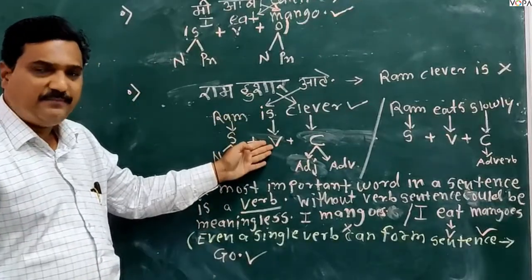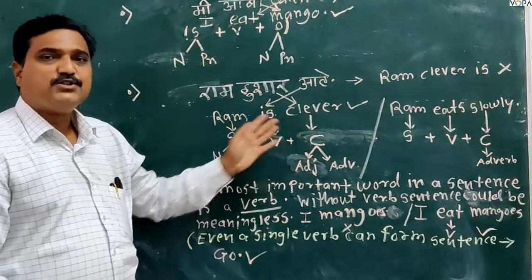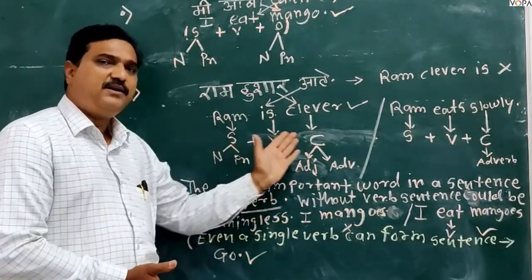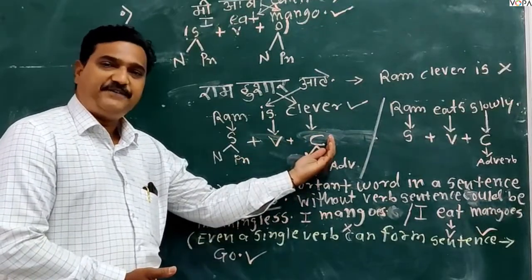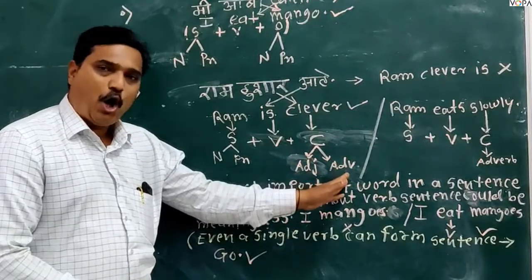Again, is is word. Then Ram is subject and clever is compliment. So we can say ideal structure is subject plus word plus compliment. Compliment will come after word, and compliment could be either adjective or adverb.